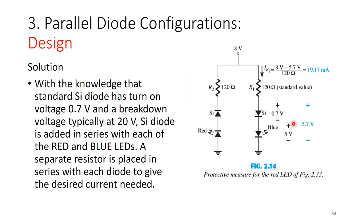Solution: use a standard silicon diode in series with the red LED path. A silicon diode has a turn-on voltage of 0.7 volts and a breakdown voltage typically of 20 volts. By placing a silicon diode in series with the red LED, for that side to break down in reverse requires 20 plus 3 equals 23 volts. Since the circuit locks at 5.7 volts (the blue LED plus silicon diode), it never reaches 23 volts.